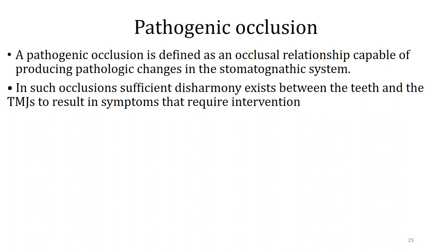Coming to pathogenic occlusion. Pathogenic occlusion is defined as an occlusion relationship capable of producing pathologic changes in the stomatognathic system. If it produces problems in our whole system — the TMJ, the muscles, and the teeth — then it will be a pathogenic occlusion. In such occlusions, sufficient disharmony exists between the teeth and the TMJ to result in symptoms that involve intervention.